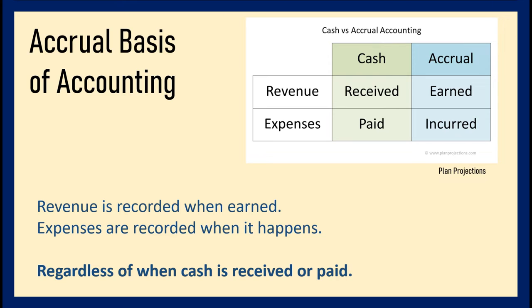Similarly, if you have expenses in January but paid them in February — like electric bills, which we usually receive and pay the following month — we still record them in January. We record revenue and expense transactions when they happen, regardless of when cash is received or paid. The opposite is the Cash Basis of Accounting, which we no longer use because it leads to incorrect timing of transactions.